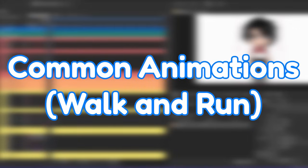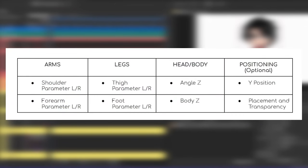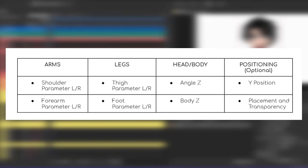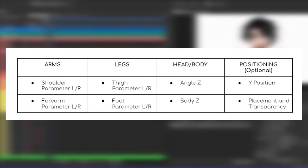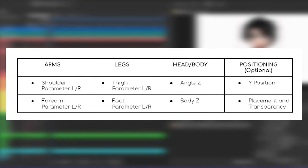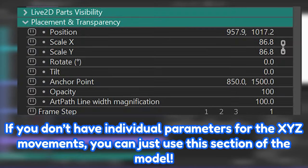Now let's try to animate some common animations, starting off with a simple basic walking animation. The parameters you need will obviously be the arm parameters — shoulder and forearm parameters, both left and right — parameters for the legs, the thigh and foot parameters, the angle Z and body Z parameters, and optionally parameters for positioning. We're going to use the Y position, but you can simply use the placement and transparency.